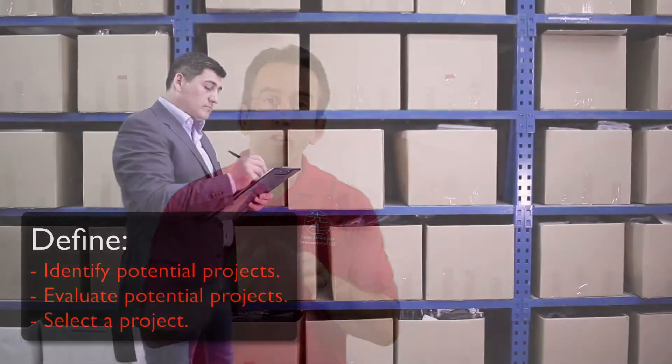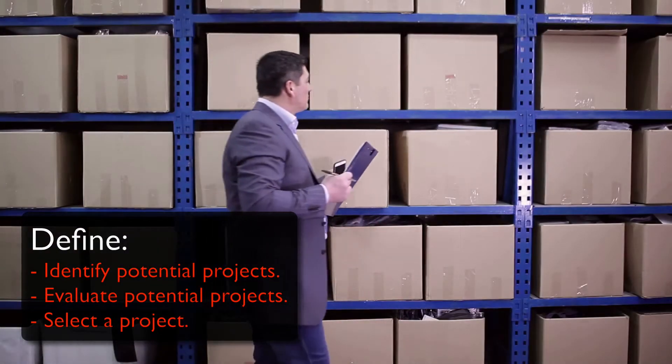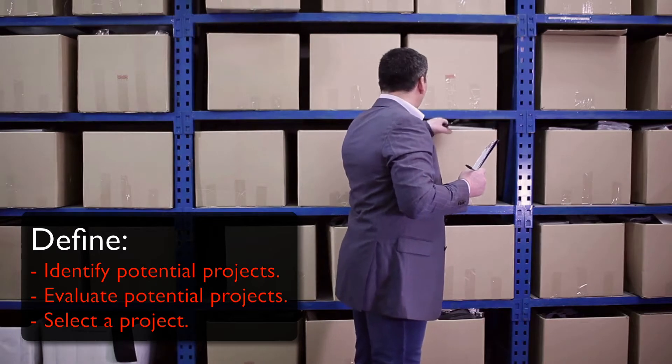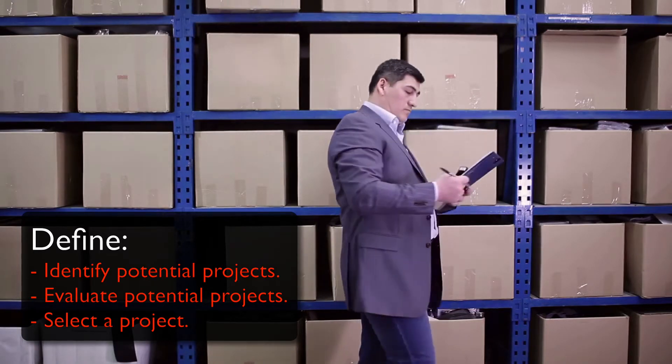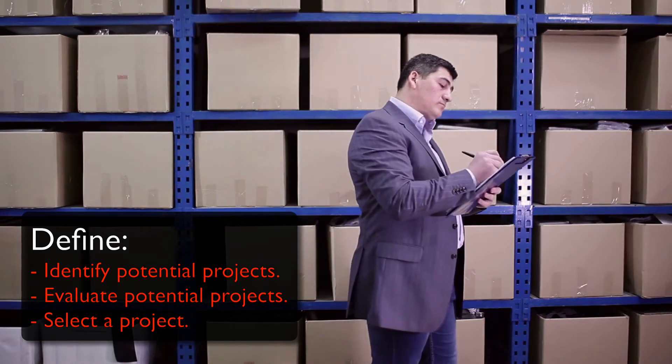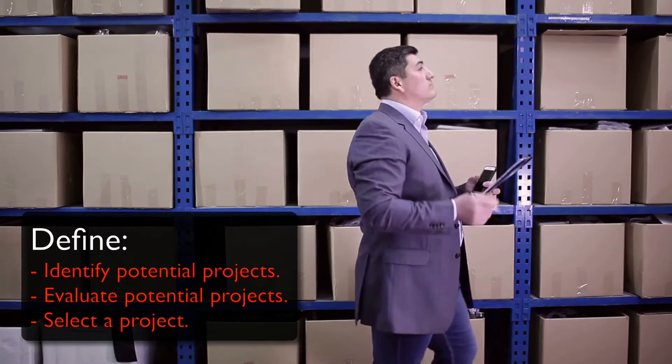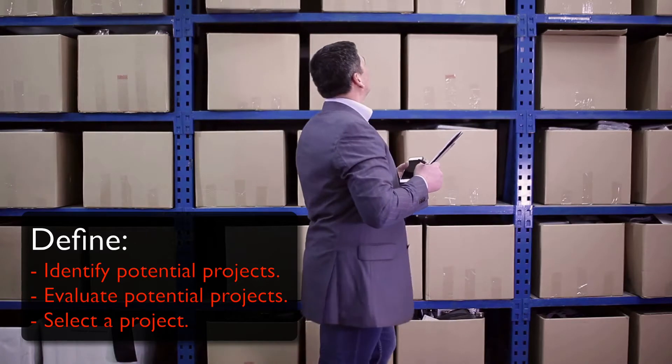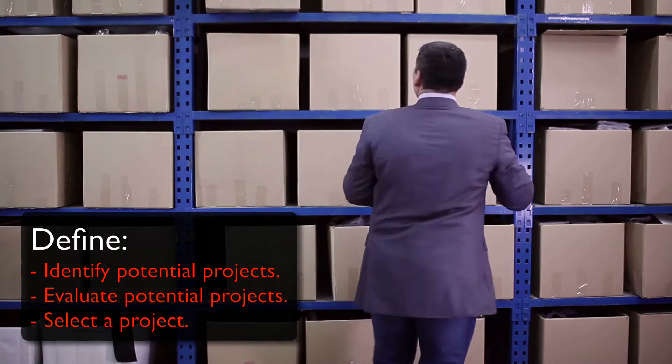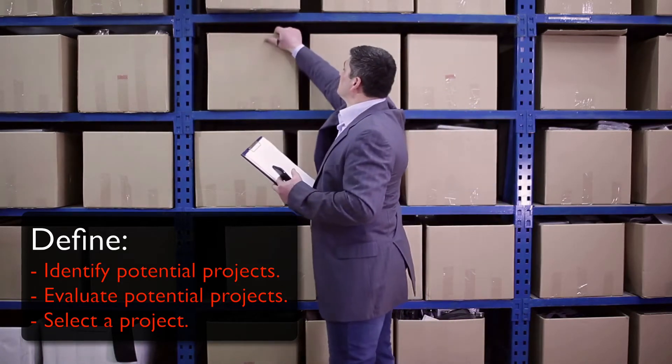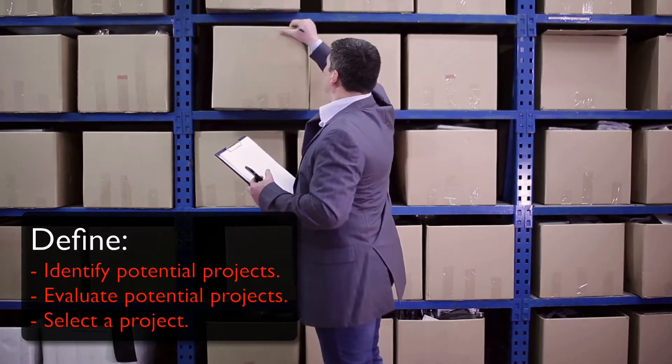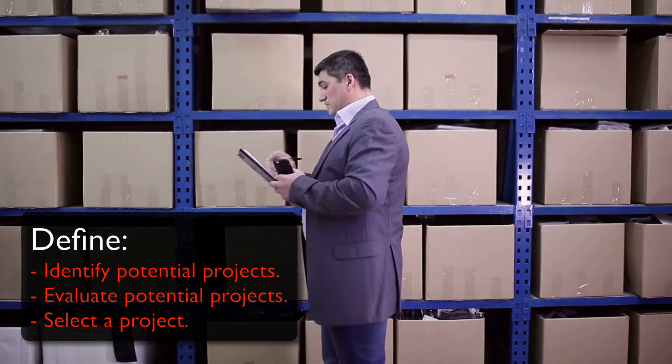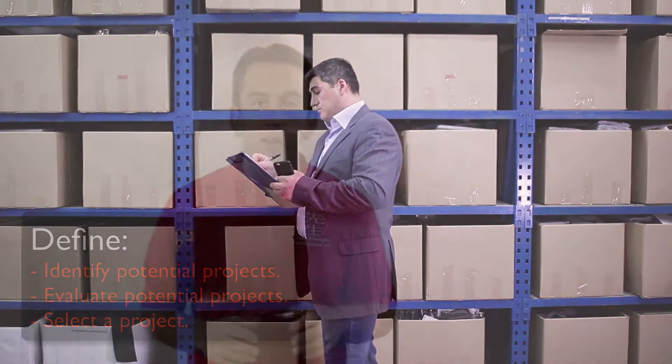In the first stage of the DMAIC methodology, potential projects are identified, evaluated, and ultimately selected. A problem statement is normally drafted along with goals so that everyone understands what needs to be done. This critical first stage sets the context and scope within each of the project stages, and it tells everyone what should be executed.